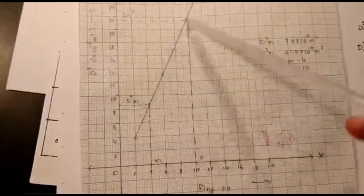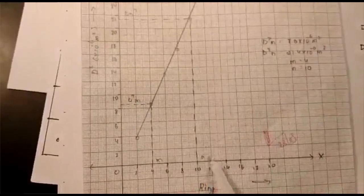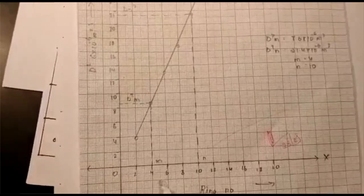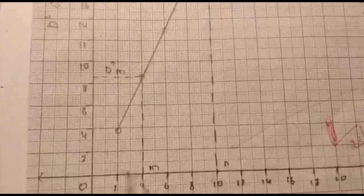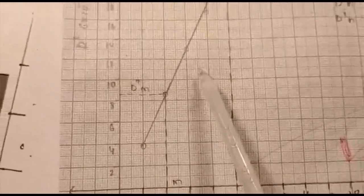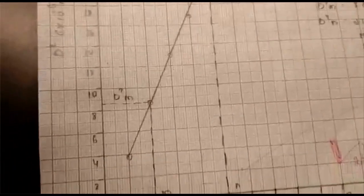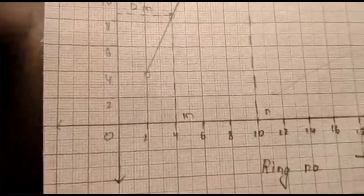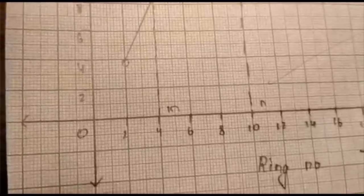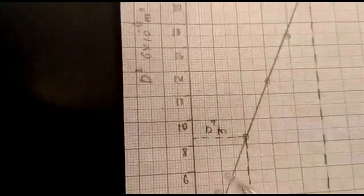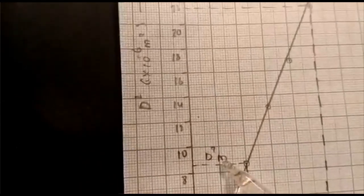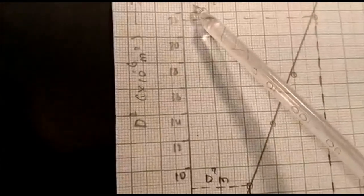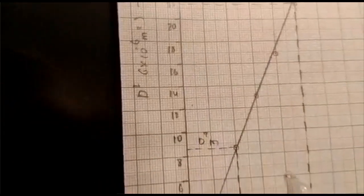After joining all the points, draw two lines anywhere on the straight line. Here I have considered ring numbers 4 and 10. Note down the M value as 4 and N value as 10. The corresponding D_M² value is 8.6 and D_N² value is 21.4. Note both values: D_N² minus D_M² and N minus M.